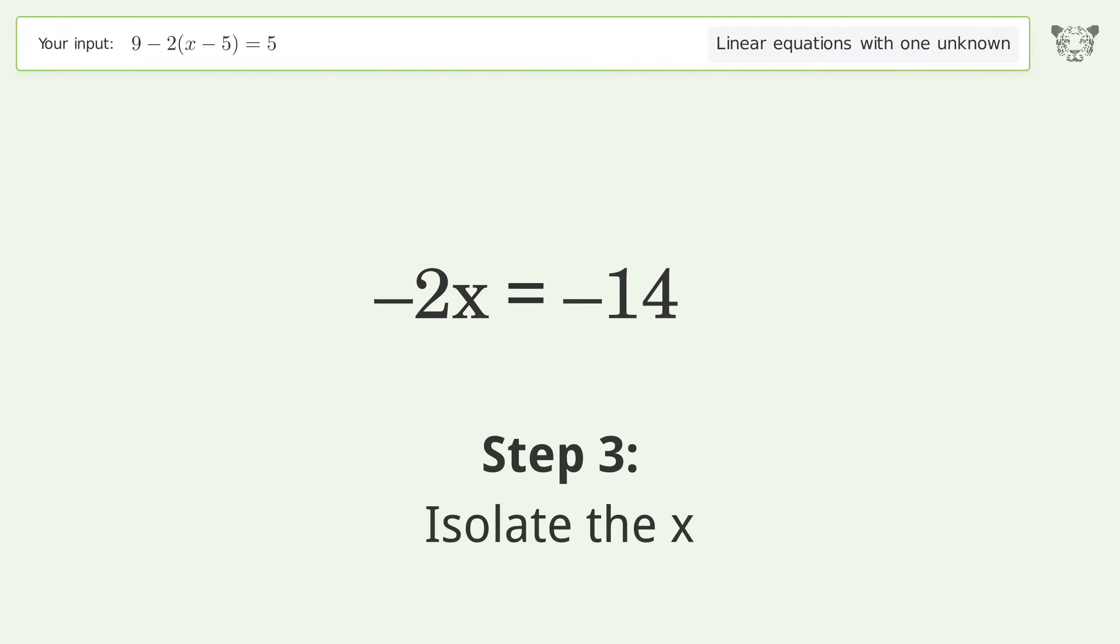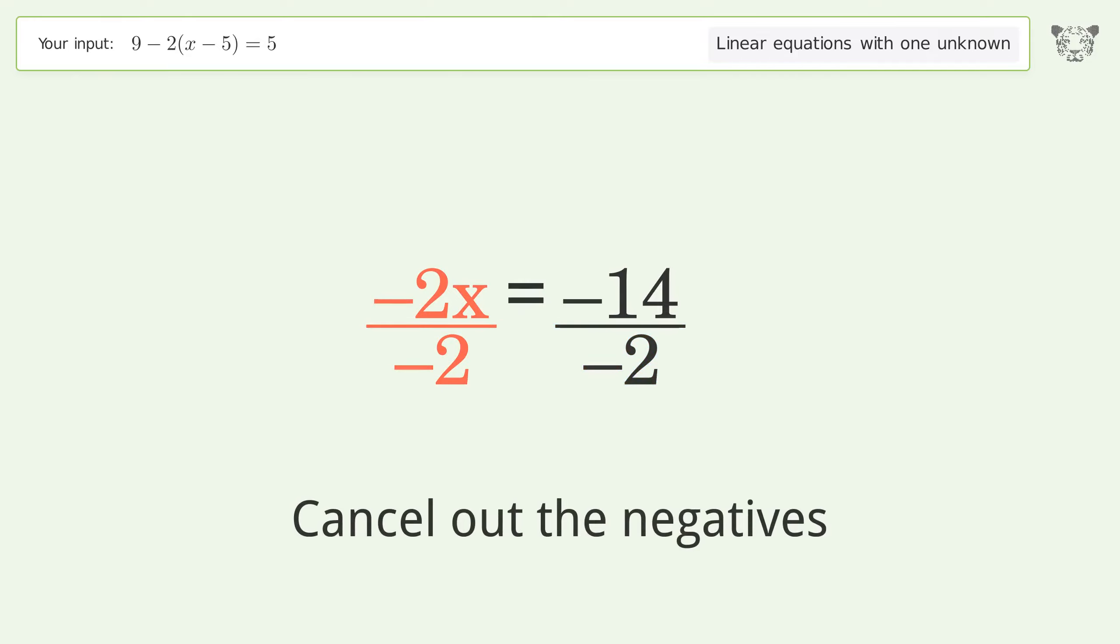Isolate the x. Divide both sides by negative 2, cancel out the negatives, simplify the fraction.